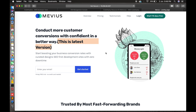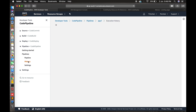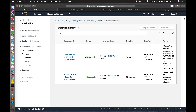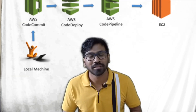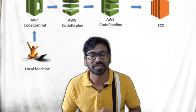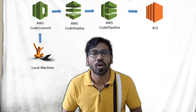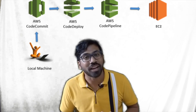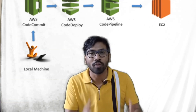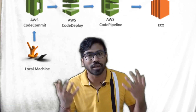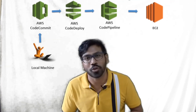Now you can see how all the processes — CodeCommit, CodeDeploy, and CodePipeline — work together for continuous integration and continuous deployment. You can check the history here. Thank you for watching. Please like, share, comment, and subscribe to get the latest videos on web programming and web server configurations. Thank you so much.